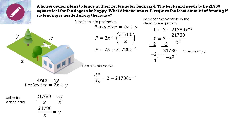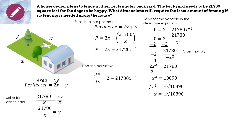So negative 2 over 1 equals 21,780 over negative x squared. Cross multiplying: negative 2 times negative x squared is 2x squared, and 1 times 21,780 is 21,780. Both are even so we divide by 2: x squared equals 10,890. Taking the square root of both sides, the square root of x squared is x, and the square root of 10,890 is plus or minus the square root of 10,890. Distance can never be negative, so x equals the square root of 10,890, approximately 104.36 feet. We have one of the sides — let's find the other.